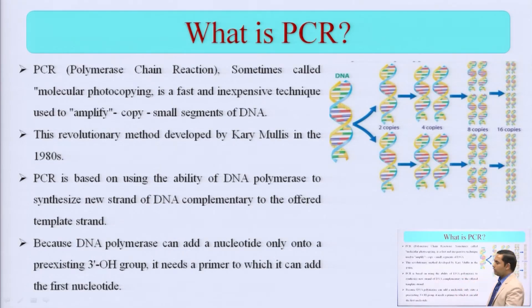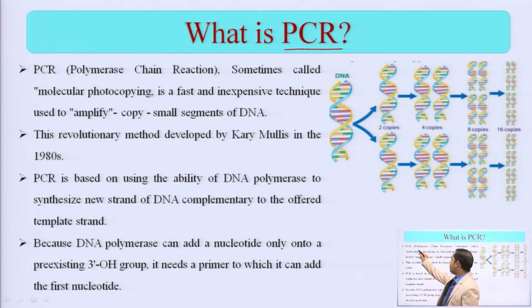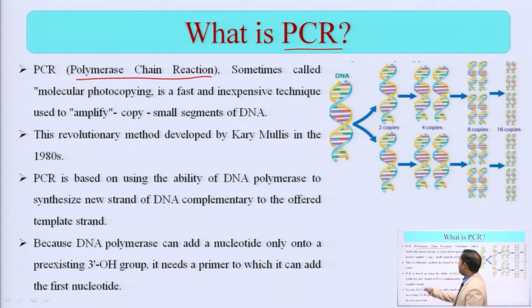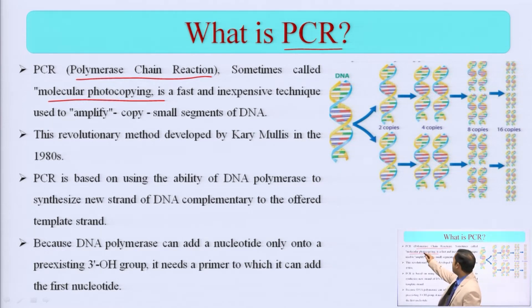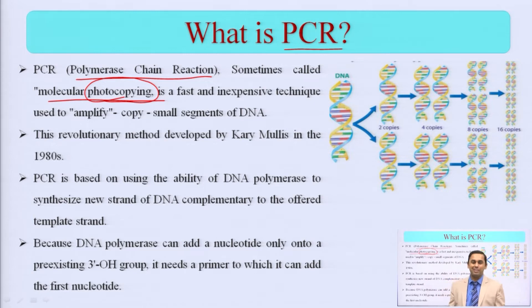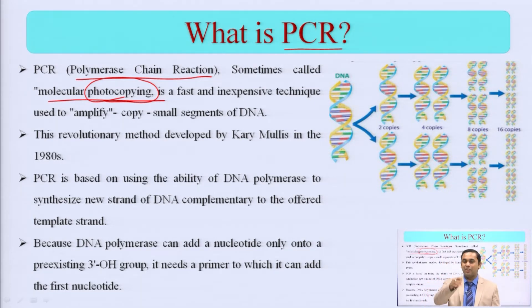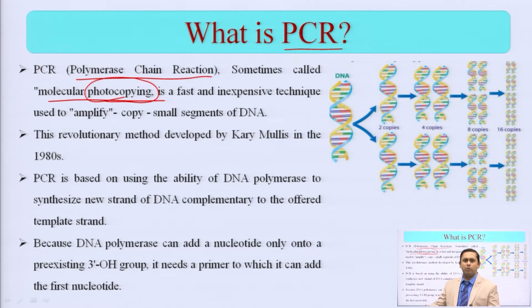So PCR — what is Polymerase Chain Reaction? Sometimes we also call it molecular photocopying. When we talk about photocopy, you might be thinking of the photocopy machine, and yes, you are thinking correctly. In a photocopy machine, if you give one copy, it will give you multiple copies — whatever number you want. Similarly, the PCR machine will give you multiple copies of your DNA.